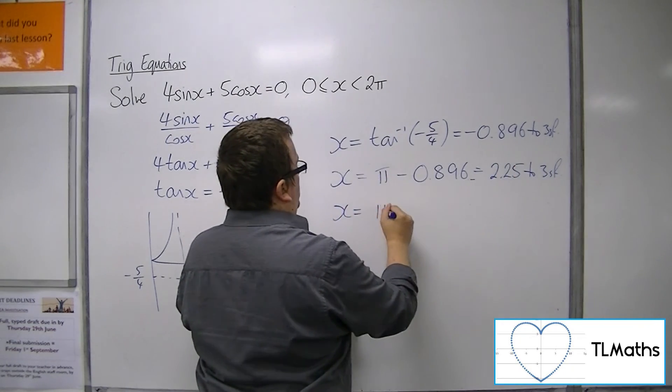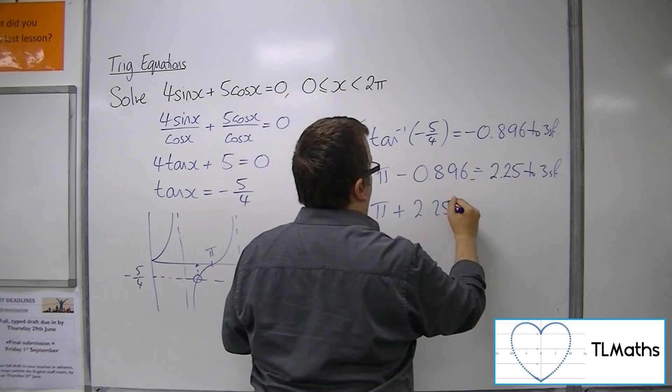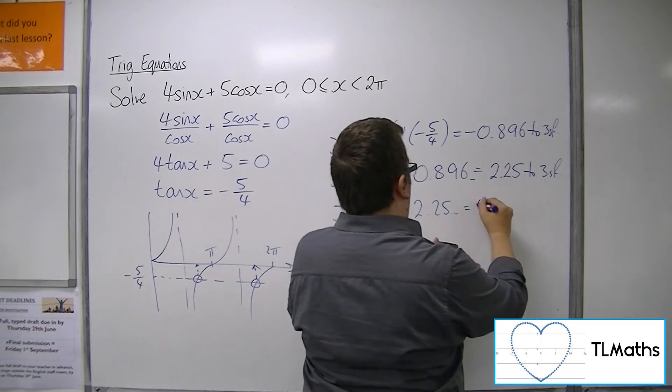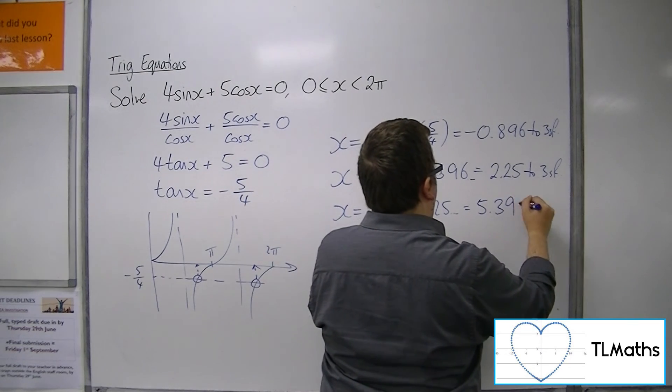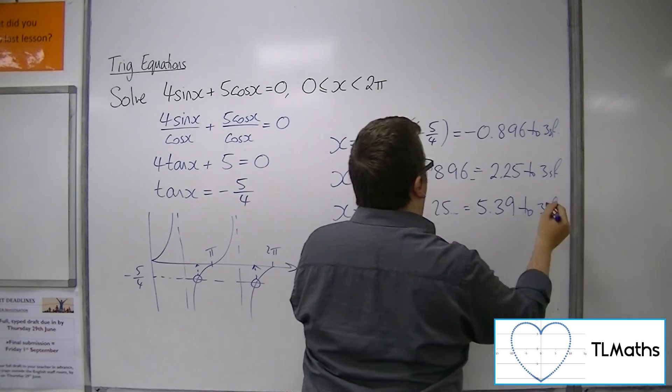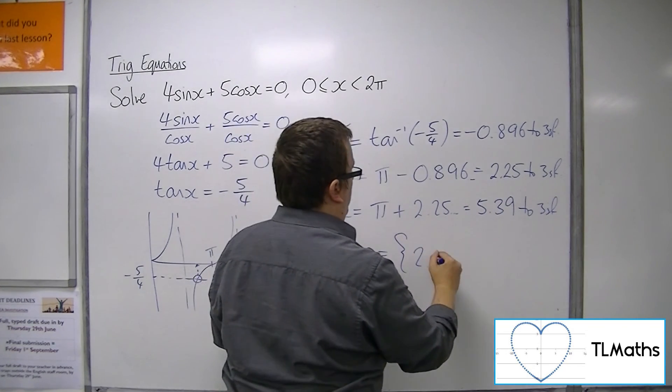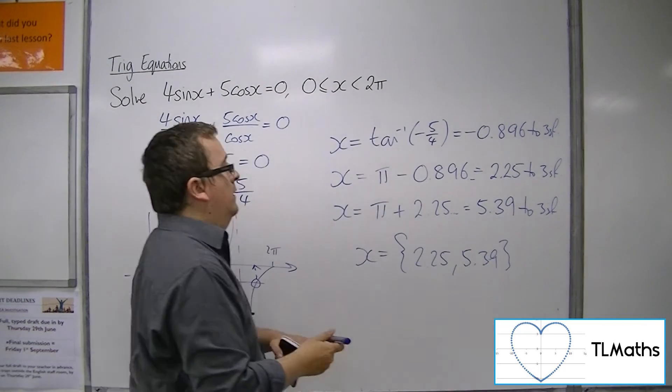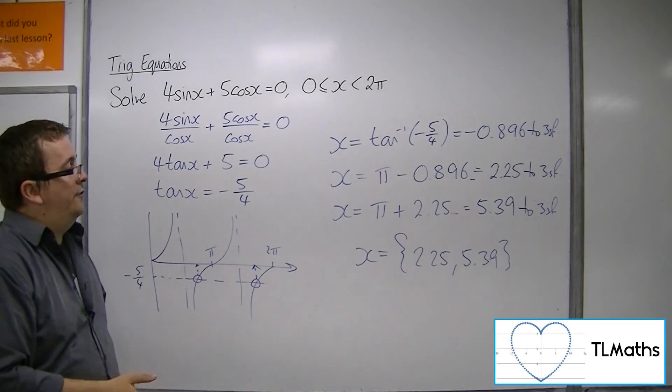And then adding π onto that gets me my second solution of 5.39 to 3 sig fig. So I have the two solutions, 2.25 and 5.39 to three significant figures.